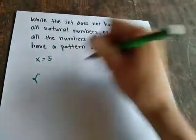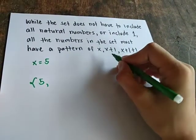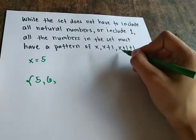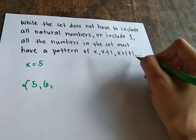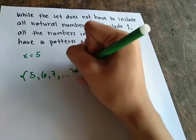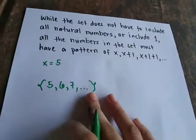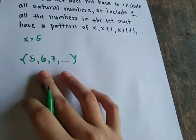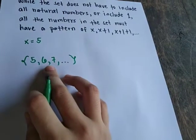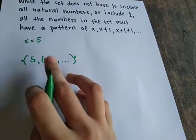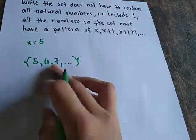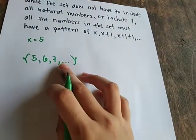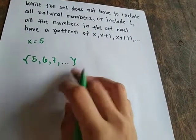For example, x is 5. The next term is x plus 1, so 5 plus 1 is 6. Then, next is x plus 1 plus 1: 5 plus 1 plus 1 is 7, and so on. This set follows the pattern of adding 1 to the previous number to get the next number. So the next number after 7 is 8, and the next number after 8 is 9, and so on.